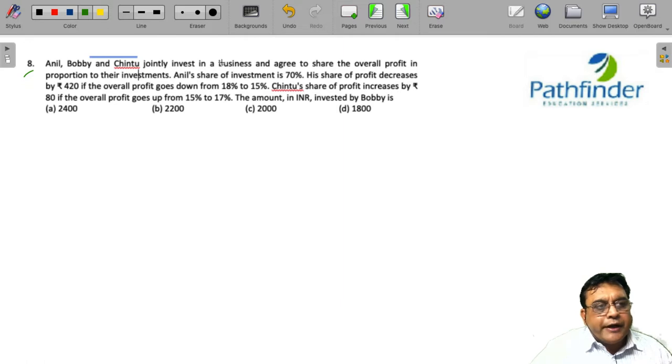Anil, Bobby and Chintu jointly invest in a business and agree to share the overall profit in proportion to their investments. Obviously this is not new information. We already know that generally in businesses, profits are shared in ratio of investments.